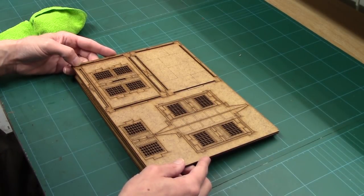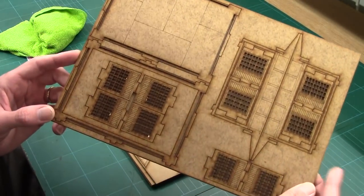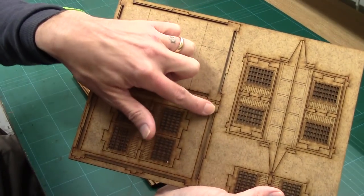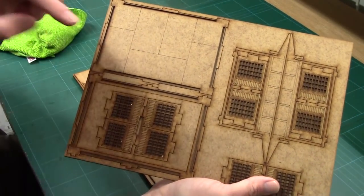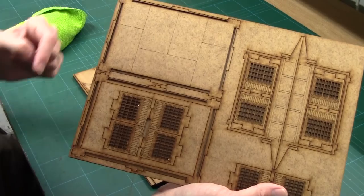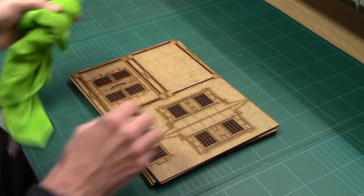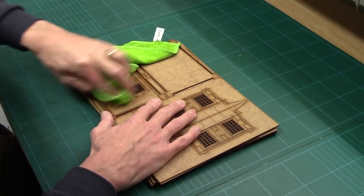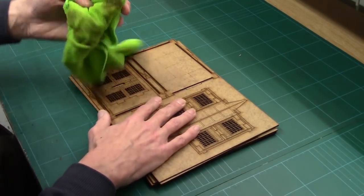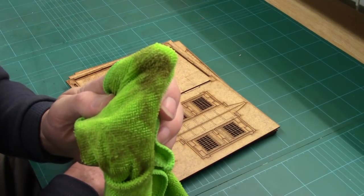First tip, always wipe your boards. When you get laser-cut terrain you often get residue from the cutting process on, and if you don't wipe it off that's going to soak through your paint and cause you problems in the future. So get a damp rag, give it a little wipe while it's still on the board, and take all that residue off.